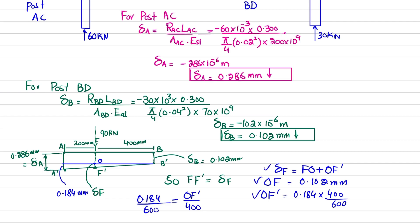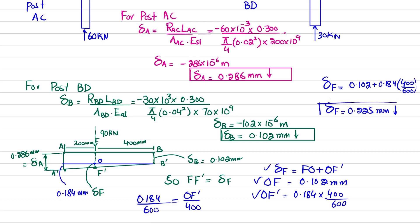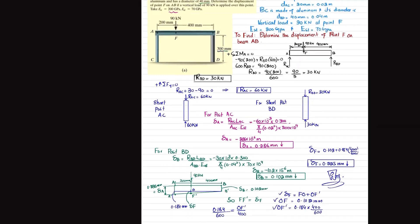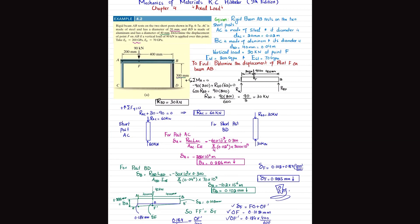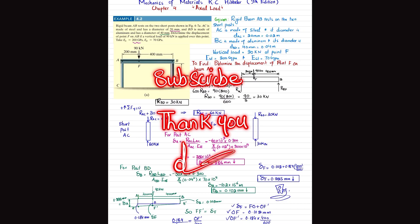Plugging in the values: δ_F = 0.102 + (0.184 × 400/600) = 0.102 + 0.123 = 0.225 mm downward. This is the answer — the displacement of point F is 0.225 mm downward. That concludes Example 4.2. If you have any questions, ask in the comment section, and subscribe to the channel for notifications about new videos.